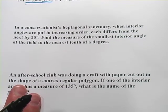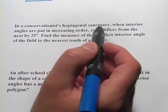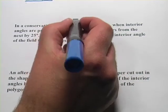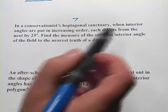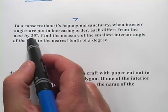This one says, in a conservationist's heptagonal sanctuary, so some sort of garden, maybe it's got a wall around it, and it's seven sides. When interior angles are put in increasing order, each differs from the next by 25.